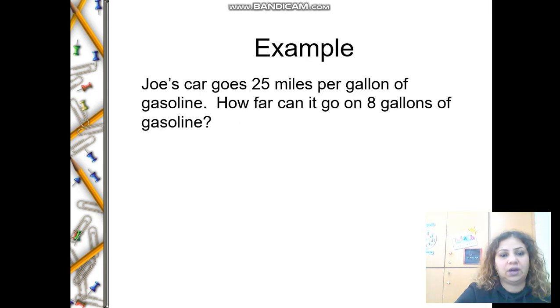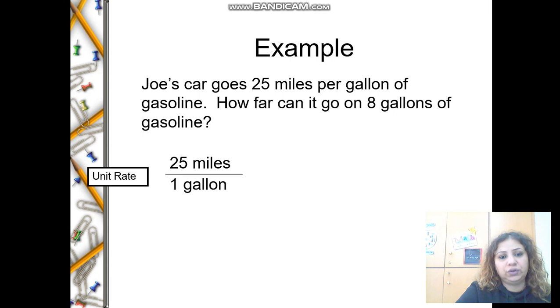Let's see how. This is an example: Joe's car goes 25 miles per gallon of gasoline. How far can it go on 8 gallons of gasoline? 25 per 1 gallon, and the other ratio is the unit rate. He goes 25 miles using 1 gallon. What if there are 8 gallons?